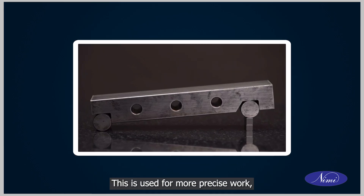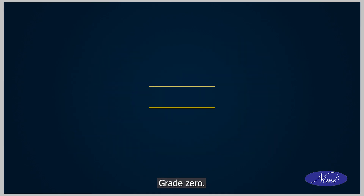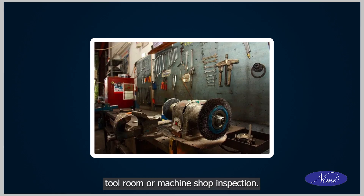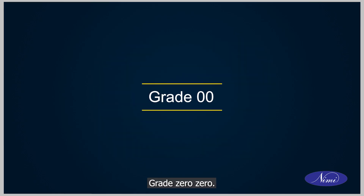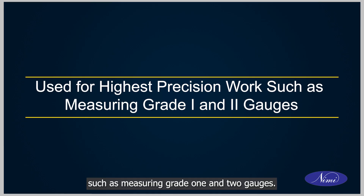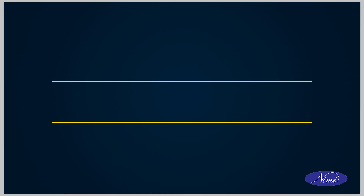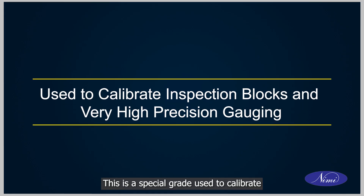Grade 1: This is used for more precise work such as setting up sine bars, checking gap gauges, and measurement of components and tools. Grade 0: This is used for tool room or machine shop inspection. Grade 00: Also termed as inspection grade block, this is used for highest precision work such as measuring Grade 1 and 2 gauges. Calibration grade: This is a special grade used to calibrate inspection blocks and for very high precision gauging.